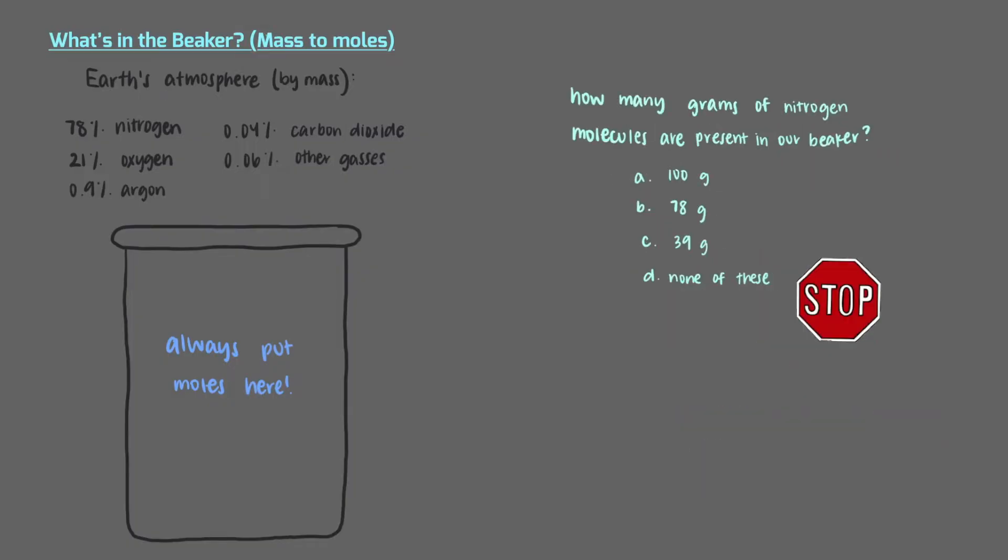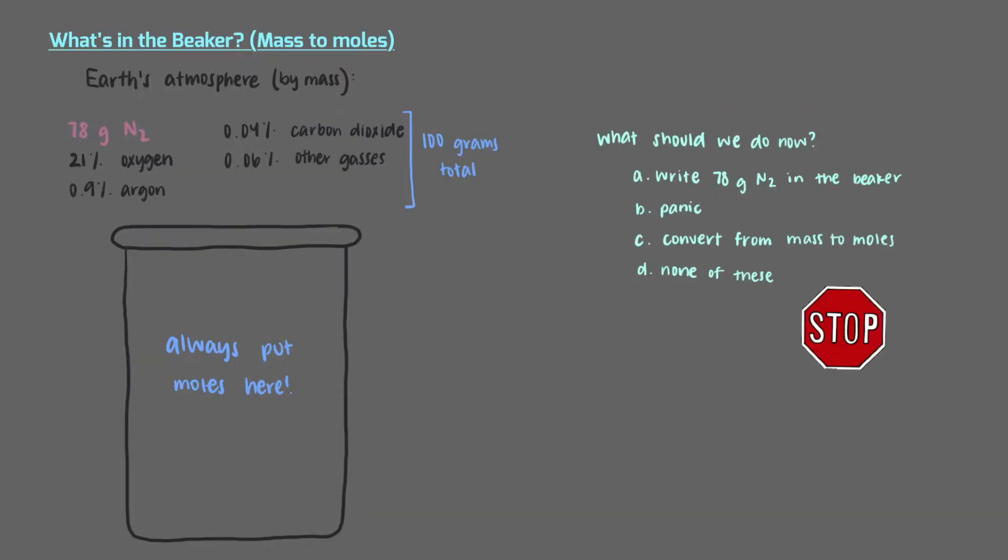How many grams of nitrogen molecules are present in our beaker? Our beaker has a total of 100 grams of atmosphere. 78% of that mass is from nitrogen, so that means that there are 78 grams of nitrogen in our beaker. What should we do now? As we said, we need everything in moles so that we can keep working. Let's convert from mass to moles.